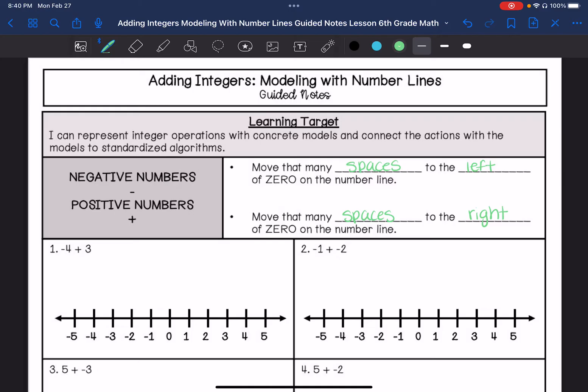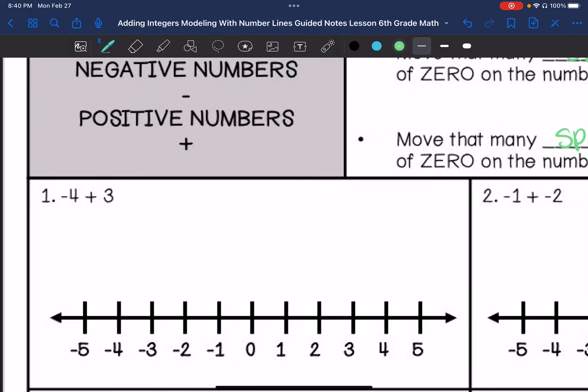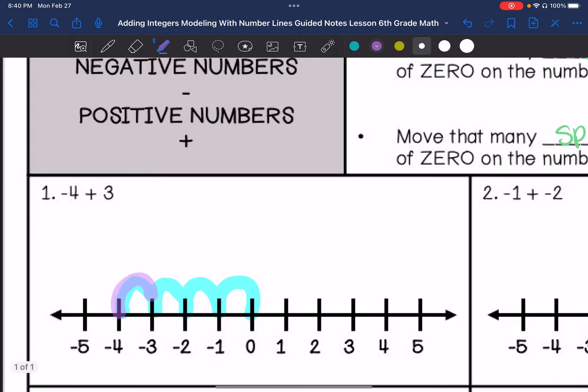In our first example, we are going to move to the left four for negative four: one, two, three, four. And then we are adding a positive three, so we are going to go back towards the right three. And then we end up at negative one. So our answer is negative one.